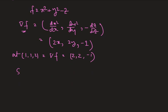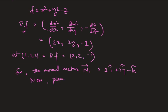So the normal vector n1 is equals to 2i cap plus 2j cap minus k cap. Now plane x plus z is equals to 3. Similarly we can find n2 which is a normal vector and it is i cap plus k cap.